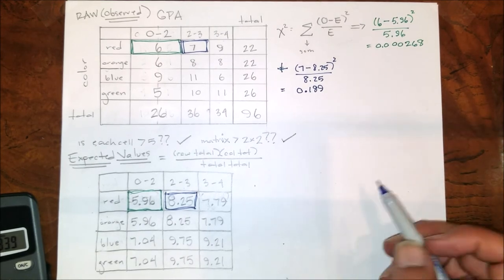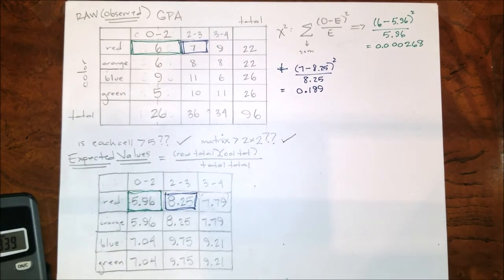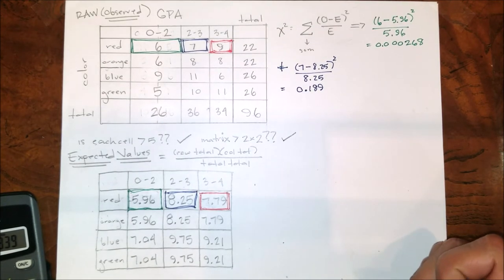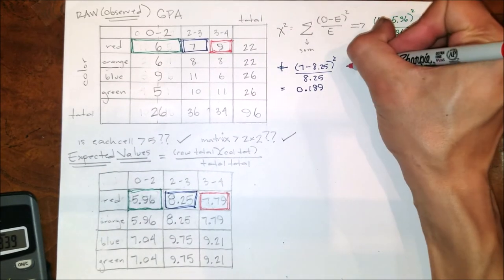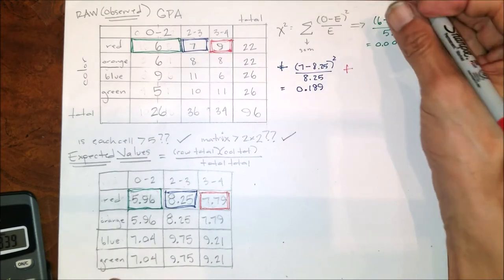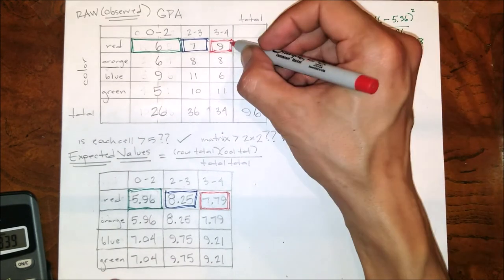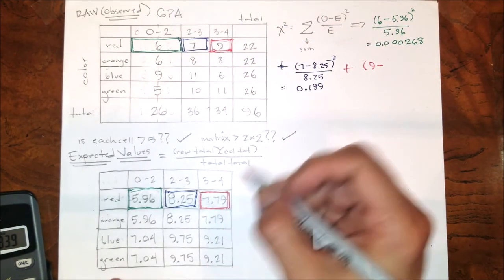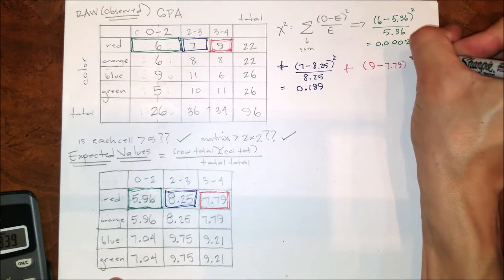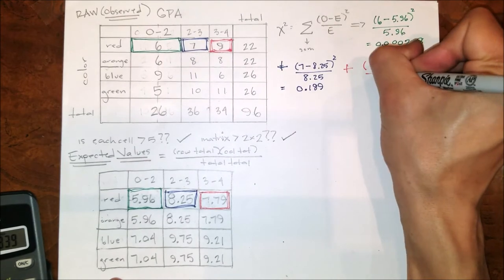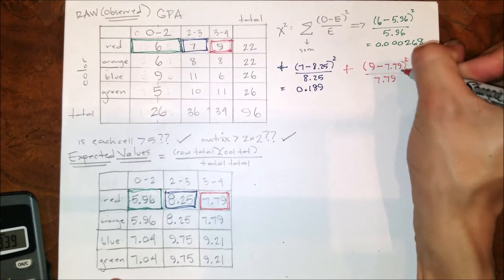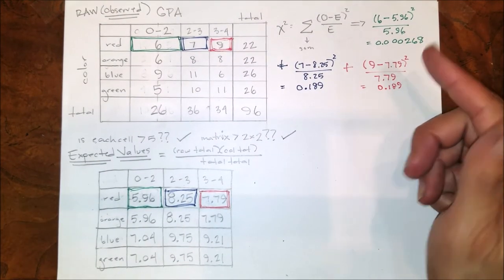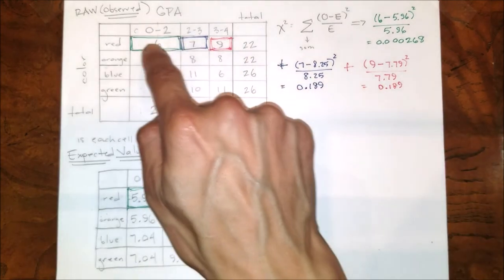So moving along, continuing on: observed 9 minus the expected that goes with it, 7.79, quantity squared, divided by expected 7.79, and that equals. So what I'll do is I'll continue on with this process through all of these cells, totaling up for each cell.